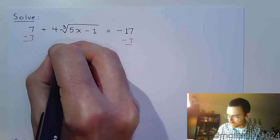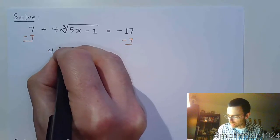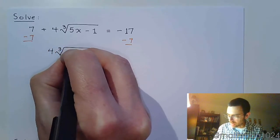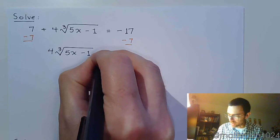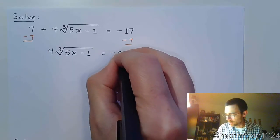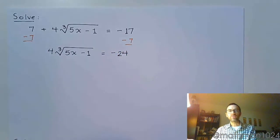We now have 4 times the cube root of 5x minus 1 is equal to negative 24.